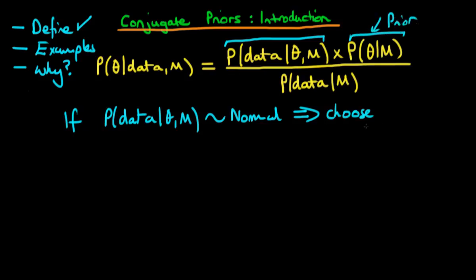And if we choose the prior, the probability of theta given our particular model choice, to also be normal, not necessarily having the same mean or anything like that, but just having a normal distribution form, then it turns out if we pick this particular distribution for the prior, then the posterior...